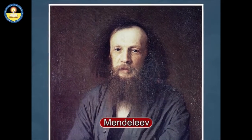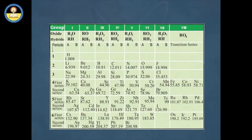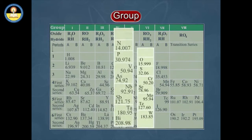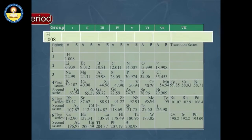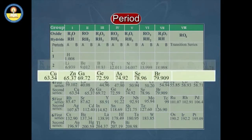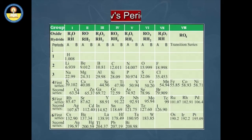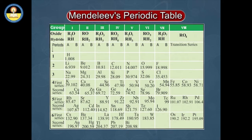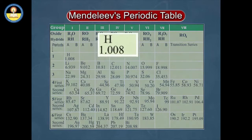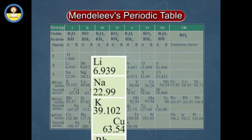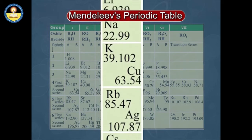Mendeleev was the first scientist who arranged the then-known 63 elements into groups and periods. This made the study of elements quite simpler because if the properties of one element in a particular group were known, those of the others could be easily predicted.